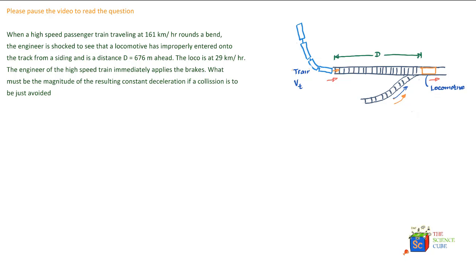This is an interesting problem where a train is moving on a track, and suddenly the driver realizes that there's a locomotive which has sneaked in from a siding. Its velocity is less than that of the train, and there's a chance of collision.